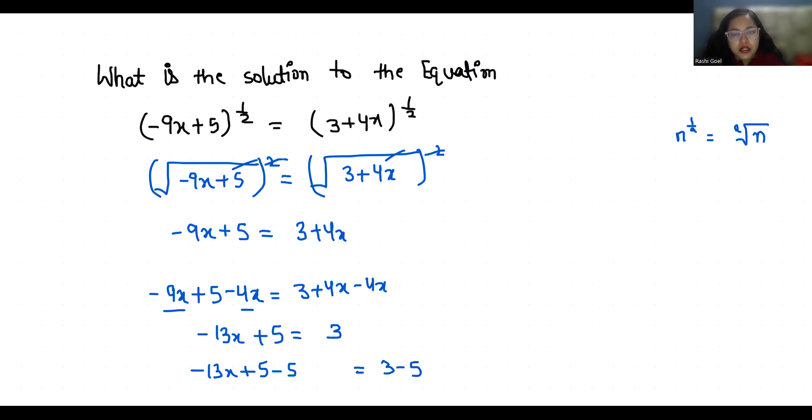Now dividing both sides by -13: x = -2/-13, which simplifies to x = 2/13. So the solution to this equation is x = 2/13.